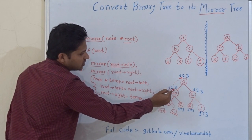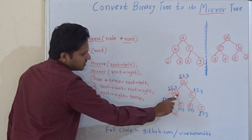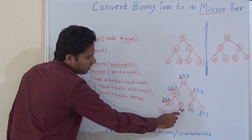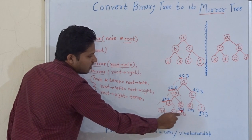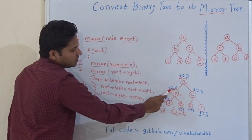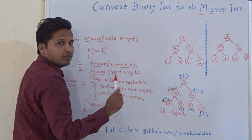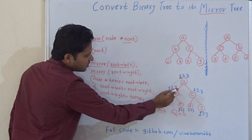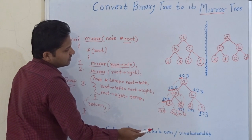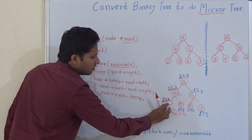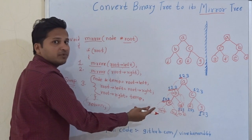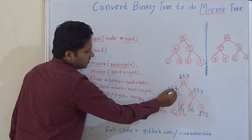Back at B, step one is done. Now we execute step two — go to E. At E, the first step finds a null left child, the second step finds a null right child, and the third step swaps both nulls. We return to B. Now at B, both step one and two are done. Step three: swap left and right child — so D and E are swapped. E is now the left child and D is the right child.